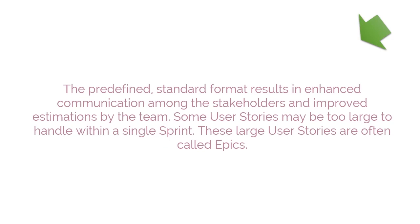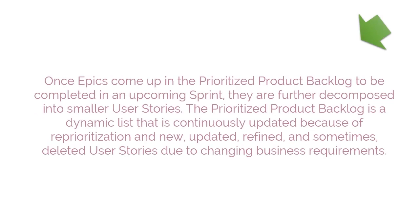Some user stories may be too large to handle within a single sprint. These large user stories are often called epics. Once epics come up in the Prioritized Product Backlog to be completed in an upcoming sprint, they are further decomposed into smaller user stories. The Prioritized Product Backlog is a dynamic list that is continuously updated because of reprioritization and new, updated, refined, and sometimes deleted user stories due to changing business requirements.